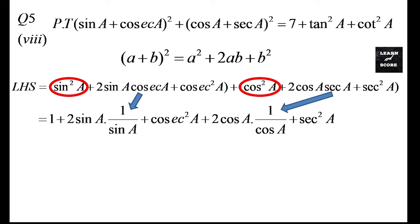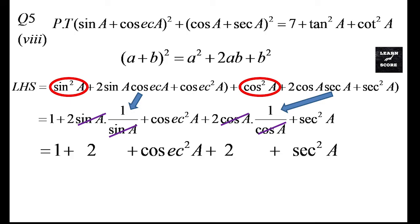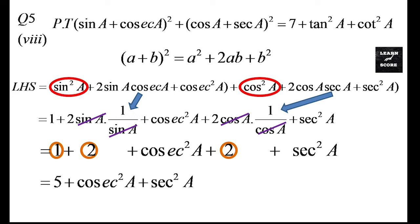Now sin²A + cos²A = 1. We know cosecA = 1/sinA and secA = 1/cosA. So after simplifying it becomes 1 + 2sinA·(1/sinA) + cosec²A + 2cosA·(1/cosA) + sec²A. SinA and sinA cancel, cosA and cosA cancel. So it becomes 1 + 2 + cosec²A + 2 + sec²A. Now 1 + 2 + 2 = 5, so we can rewrite it as 5 + cosec²A + sec²A.